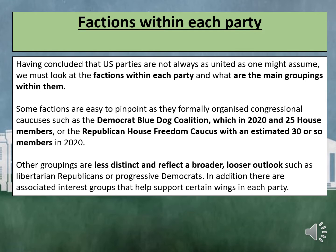Some factions are easy to pinpoint as they formally organise congressional caucuses, such as the Democrat Blue Dog Coalition, which in 2020 had 25 House members, or the Republican House Freedom Caucus with an estimated 30 or so members in 2020. Other groupings are less distinct and reflect a broader, looser outlook, such as the Libertarian Republicans or Progressive Democrats.